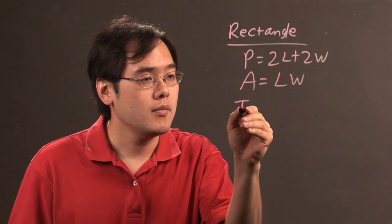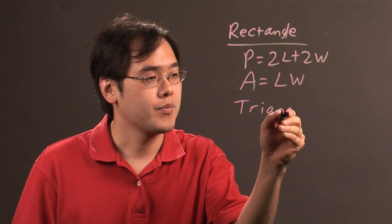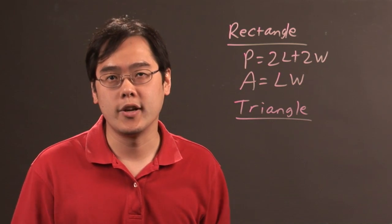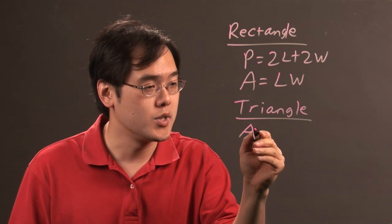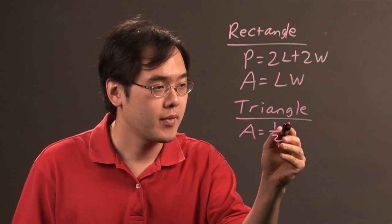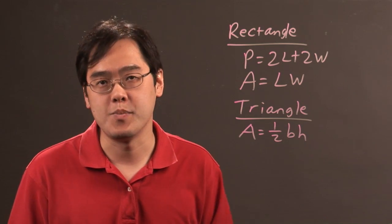Another popular shape is that of a triangle. The perimeter of a triangle is pretty straightforward because it's just adding all the sides. But the one formula that's used oftentimes is 1 half times base times height.